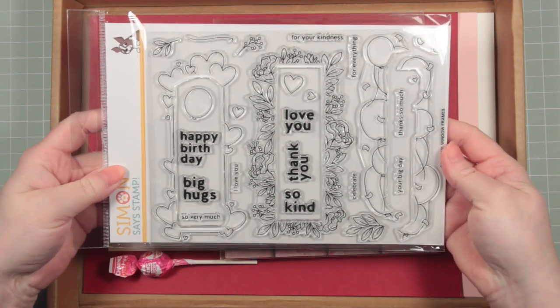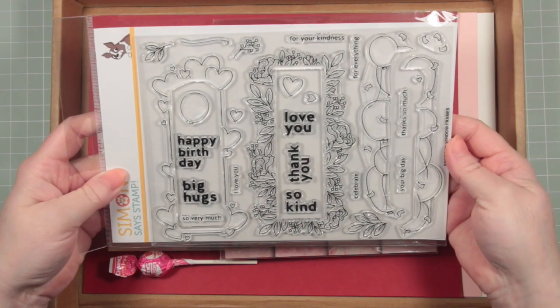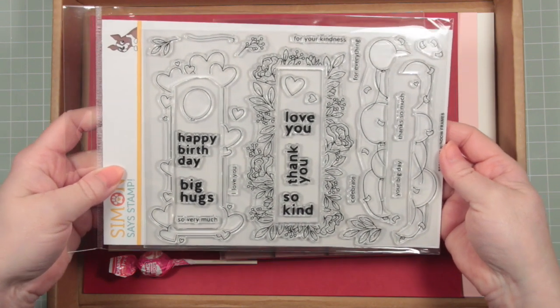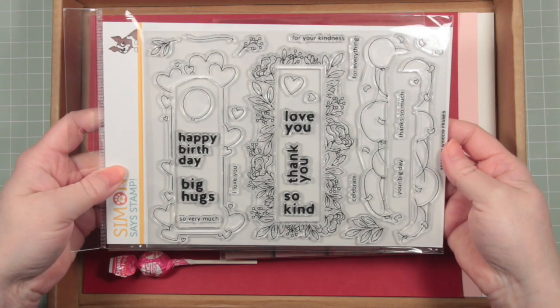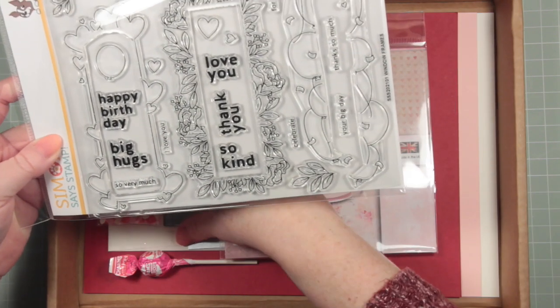The first item I want to show you is this 6x8 stamp that has three panels with designs all around the outside of those panels in hearts and foliage and balloons, and there are also a number of sentiments in there to help you get your message across.